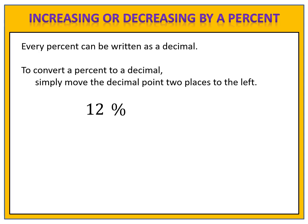We begin by adding the decimal point to the number if it's not already written. We see no decimal point here, so we put a decimal point directly after the 12. Now we move the decimal point two places to the left. Written as a decimal, 12% is 0.12 — that's the number we can use when performing mathematical computations.